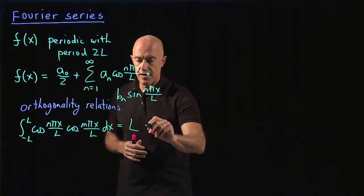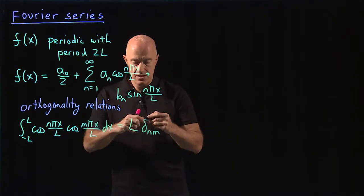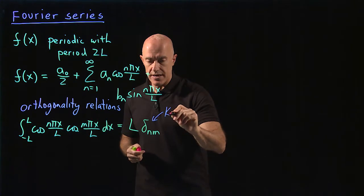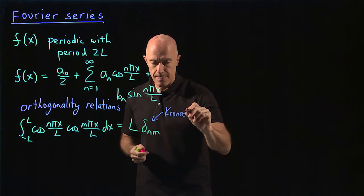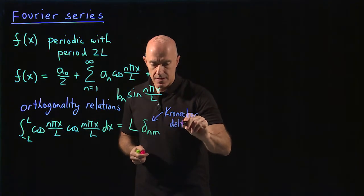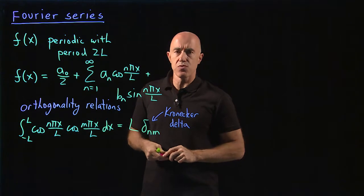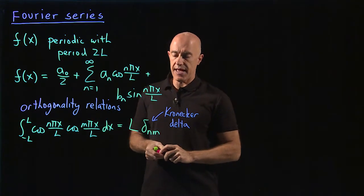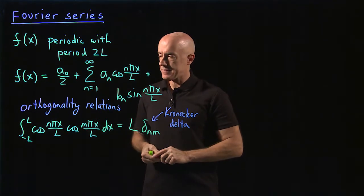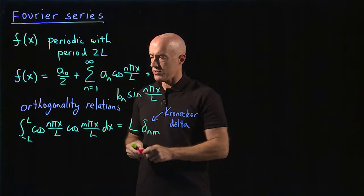To represent that, we use something called the Kronecker delta. This function satisfies that delta nm is equal to 1 when n equals m, and zero when n is different than m. So this is an orthogonality relation for these cosine functions.